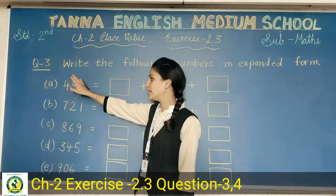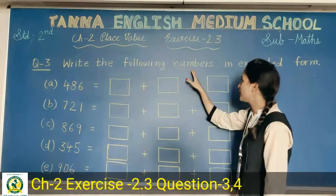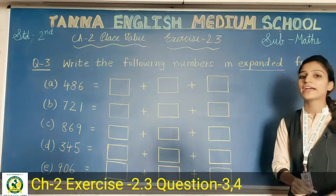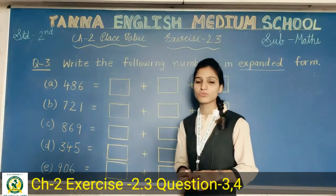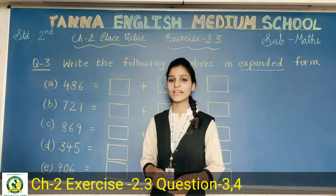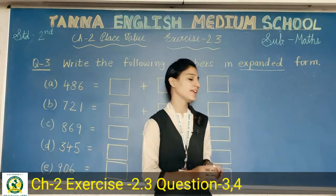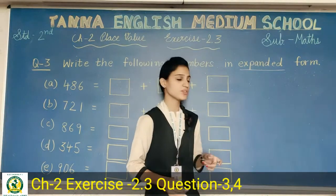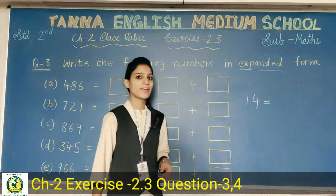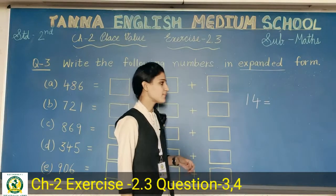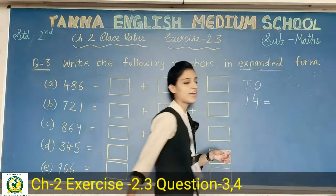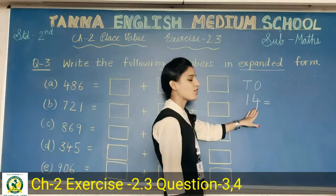The question is: write the following numbers in expanded form. You have to write your numbers in expanded form. Expanded means to expand it. For example, if you have a two-digit number like fourteen, how do you write this in expanded form? First you should know that each digit is at a specific place.